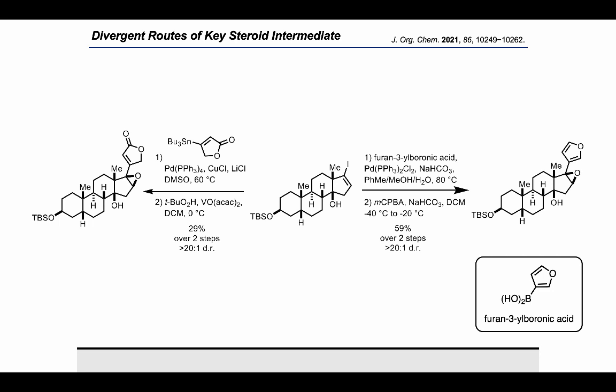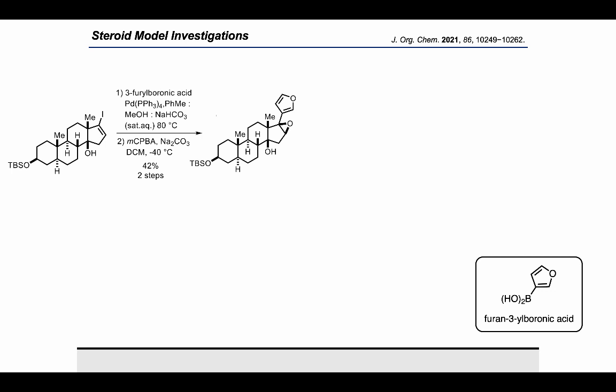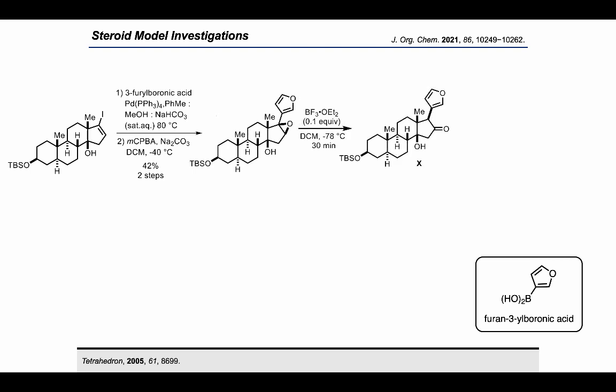With these epoxy steroids in hand, our subsequent efforts were focused on identifying the best conditions to accomplish the epoxide rearrangement, which would result in installation of the C17 stereocenter and C16 oxidation. Studies commenced by subjecting the model vinyl iodide intermediate to Suzuki coupling and epoxidation, affording the epoxy furan steroid in 42% yield over two steps. This compound was then subjected to known literature conditions using BF3·dietherate in DCM at −78°C over 30 minutes, which resulted in the desired rearrangement product in 45% yield along with multiple decomposition products.